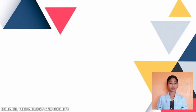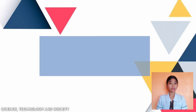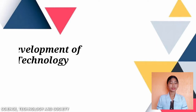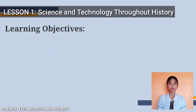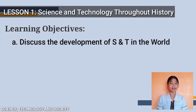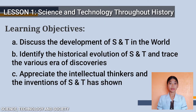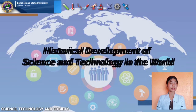Good day everyone, welcome back to our core subject, Science, Technology and Society. For today's discussion is the continuation of Lesson One, which is Science and Technology Throughout History. We will discuss the topic: Historical Development of Science and Technology in the World. Our learning objectives: at the end of the lesson, students will be able to discuss science and technology in the world, identify the historical evolution of science and technology, trace the various eras of discoveries, and appreciate the intellectual thinkers and inventions as shown in this lesson.